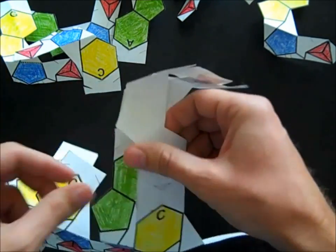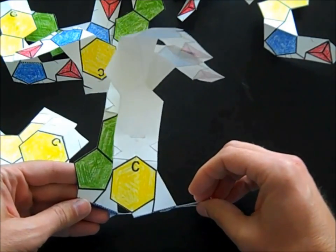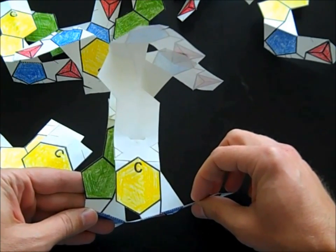And then I can see that my base pairs are at a slight angle to one another, and it's that angle that's going to make it possible for this structure to turn as the double helix.